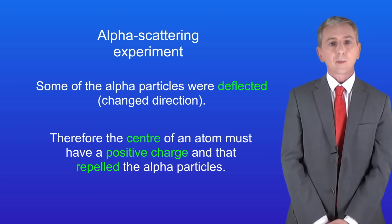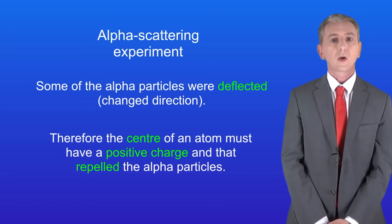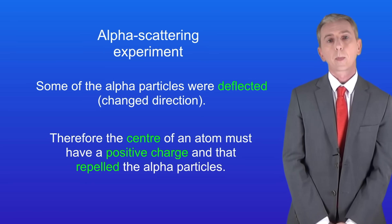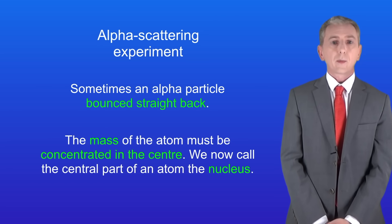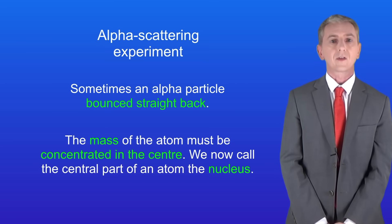Secondly, because some of the alpha particles were deflected, this told the scientists that the center of the atom must have a positive charge that repelled the alpha particles. And finally, because some alpha particles bounced straight back, this told the scientists that the mass of the atom must be concentrated in the center.